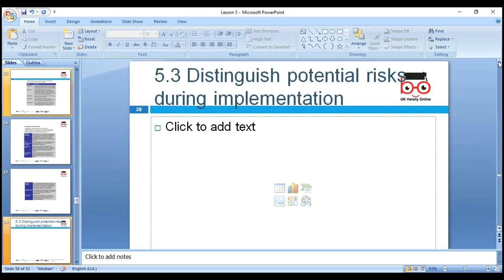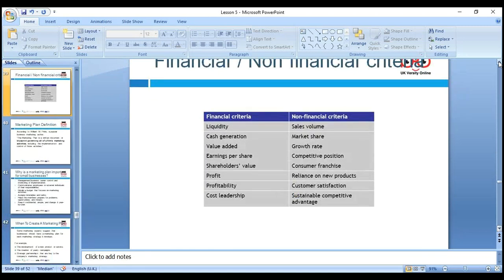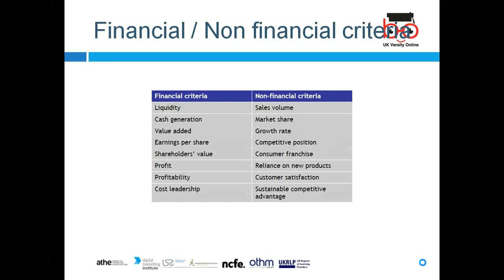Now 5.3 — looking at potential risks during implementation. We can further categorize them as financial and non-financial. Financial criteria to measure risk include: liquidity, cash generation, value added, earnings per share, shareholder value, profitability, and cost leadership. Non-financial criteria include: sales volume, market share, growth rate, competitive position, consumer franchise, reliance on new products, customer satisfaction, sustainability, and competitive advantage.